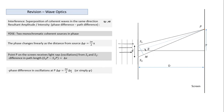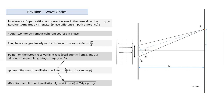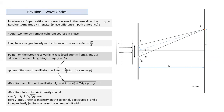Once we have the phase difference, we can find the resultant amplitude — the resultant amplitude is the phasor sum. A1 and A2 indicate the amplitudes of the light wave on the screen due to S1 alone and S2 alone respectively. The resultant amplitude follows the law of parallelogram. Based on resultant amplitude, we can find resultant intensity — intensity is proportional to the square of amplitude.